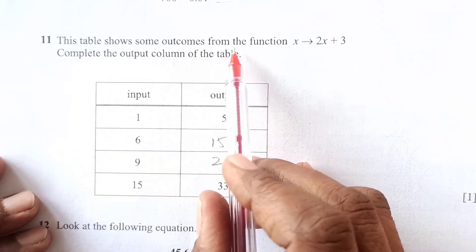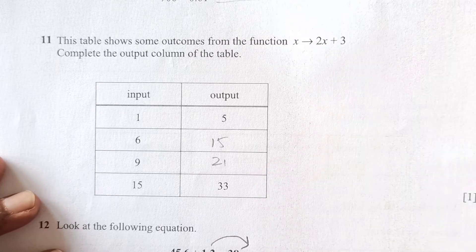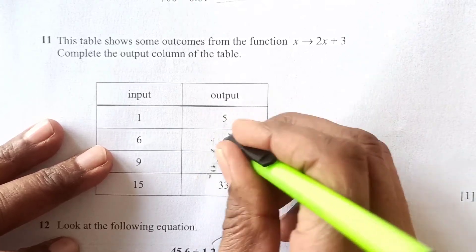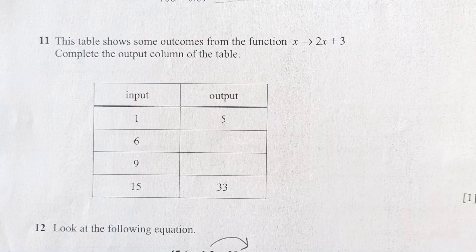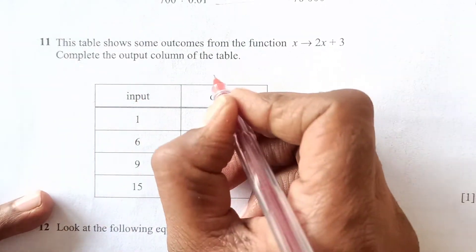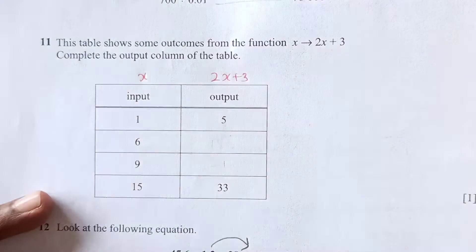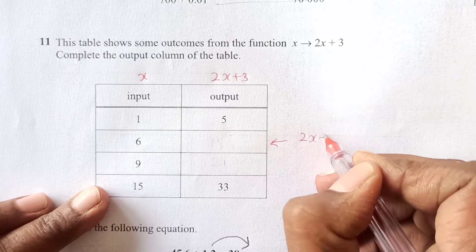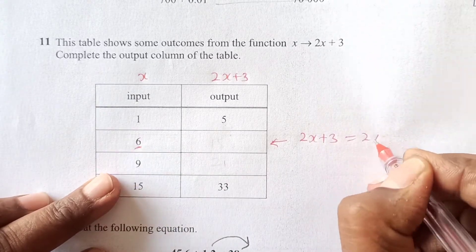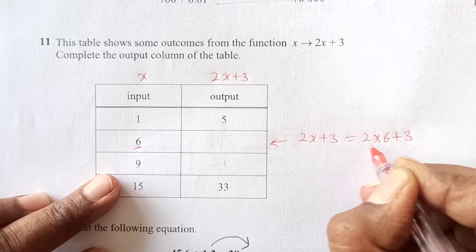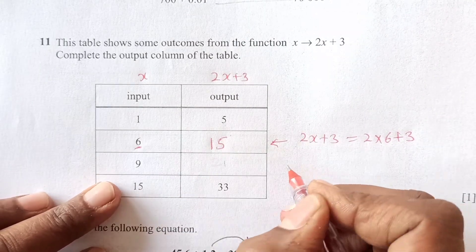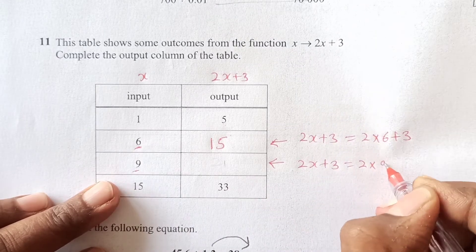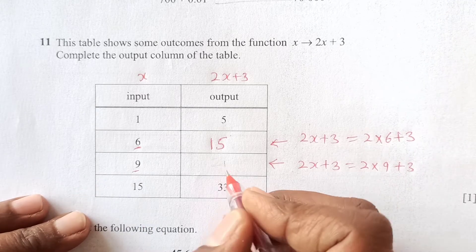This table shows some outcomes from the function x maps to 2x plus 3. The input is x and the output is 2x plus 3. For x equals 6: 2 times 6 plus 3 is 12 plus 3, which equals 15. For x equals 9: 2 times 9 is 18, and 18 plus 3 equals 21.